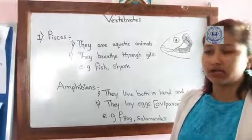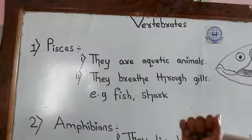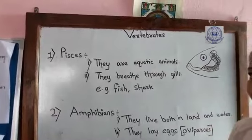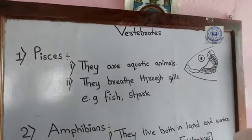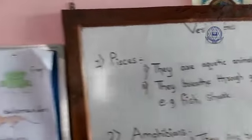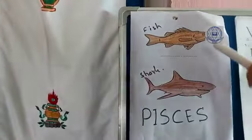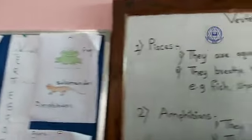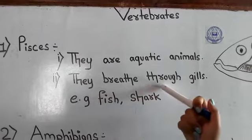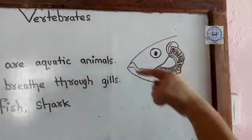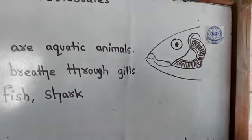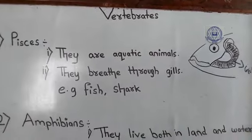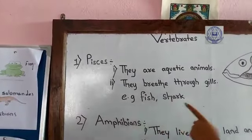Talking about Pisces: the first characteristic is they are aquatic animals. As you can see in the picture, this is a fish and this is a shark — these come under the class Pisces. The second characteristic is they breathe through gills. The gills are the part near the side of the fish's head which helps them breathe in and out.